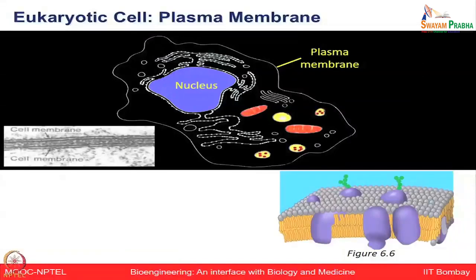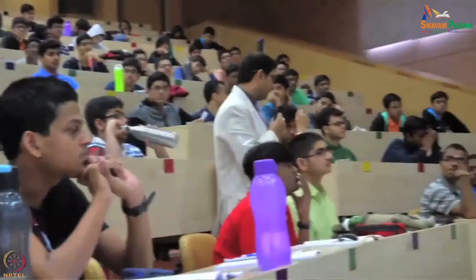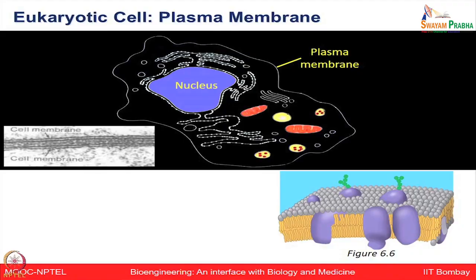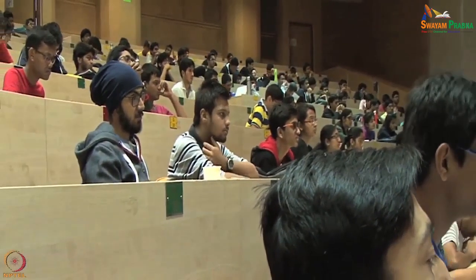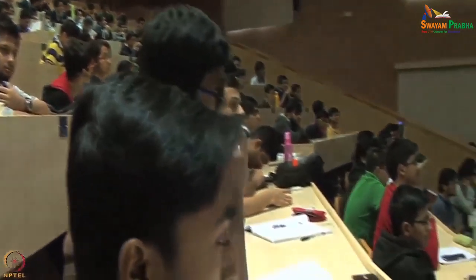In the last lecture we discussed the prokaryotic cell, various organelles, and the animal and plant cell with their distinguishing features. Let us now discuss one by one the role of different organelles in the eukaryotic cell. Starting with the plasma membrane: it provides a functional separation between the cell and the external environment, allows transport of material, and provides molecular transport and various types of signals which can be transduced from the cell.